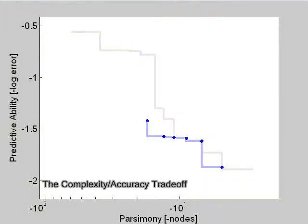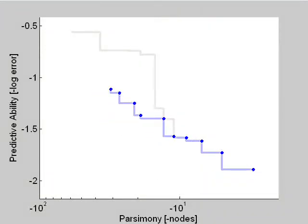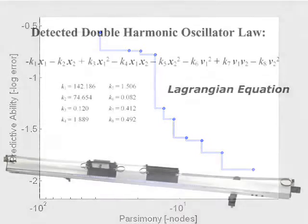The Pareto front shows the tradeoff between an equation's complexity and its ability to model a non-trivial law. Over time, the algorithm explores and builds this front. Some equations on the Pareto front are accurate but complex, while others are simple but inaccurate. Equations we are most interested in lie between these two extremes.